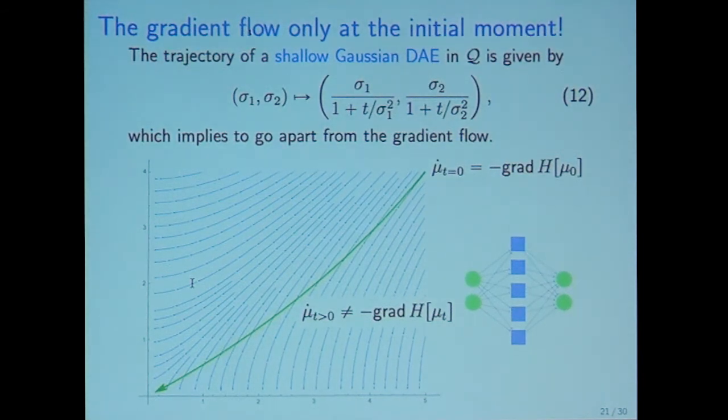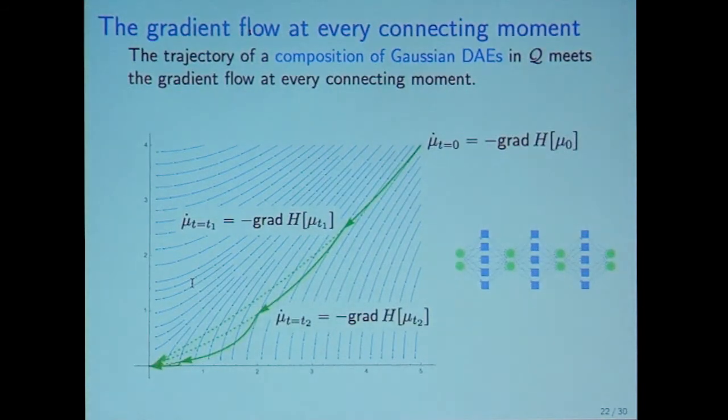Then we move to the deep denoising autoencoder. First, consider the shallow Gaussian DAE. The trajectory of shallow Gaussian DAE is also given as equation 12. This trajectory has same velocity to the gradient flow only at the initial moment. As time T gets increased, the gradient flow and the trajectory go apart.